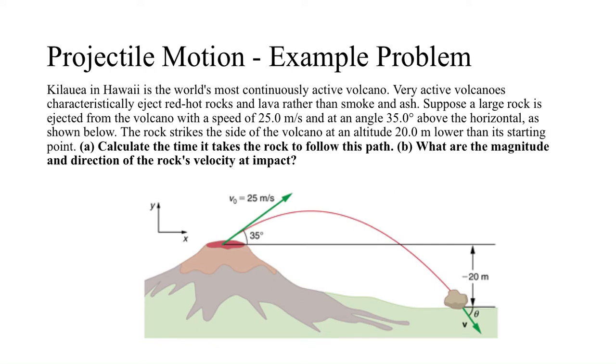Alright, for our example problem, we're going to take a look at Kīlauea. Kīlauea in Hawaii is the world's most continuously active volcano. Very active volcanoes characteristically eject red-hot rocks and lava rather than smoke and ash. Suppose a large rock is ejected from the volcano with a speed of 25 meters per second at an angle 35 degrees above the horizontal, as shown below. The rock strikes the side of the volcano at an altitude 20 meters lower than its starting point.